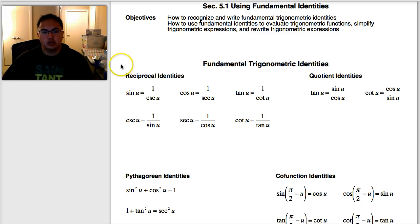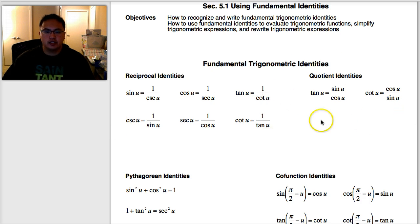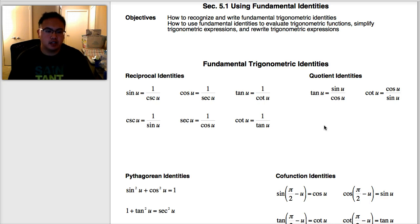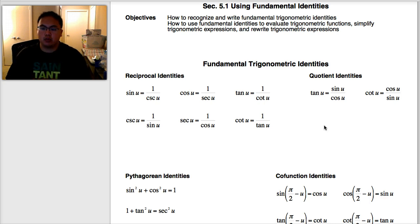The reciprocal identities, the quotient identities, and the Pythagorean identities. Between these three types of identities, we can verify or prove an equation is true or not.